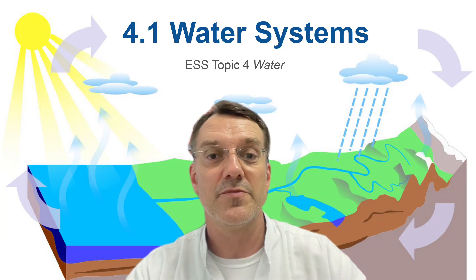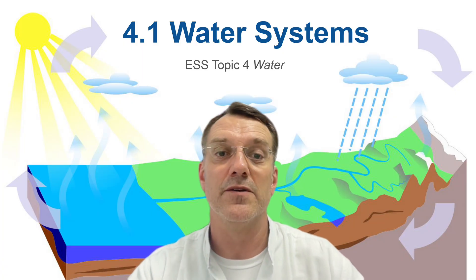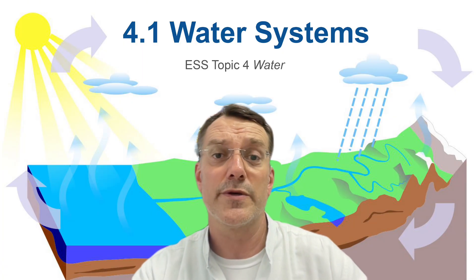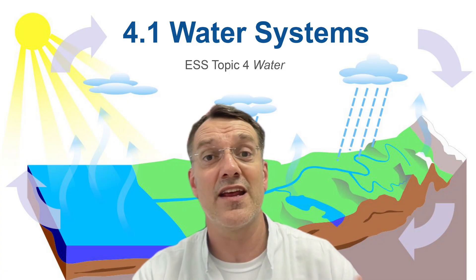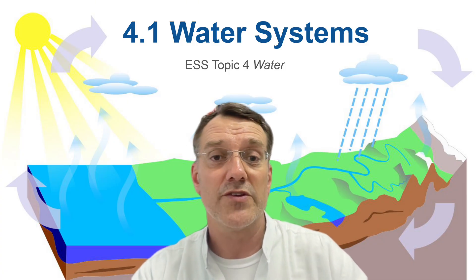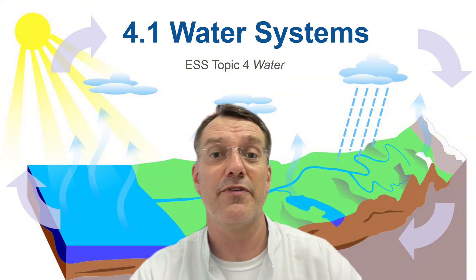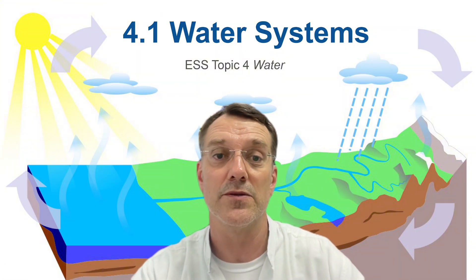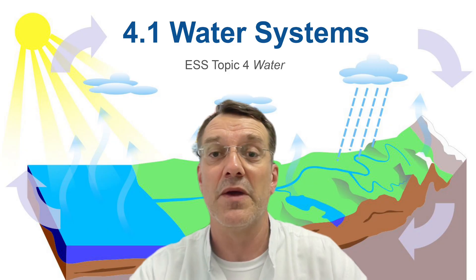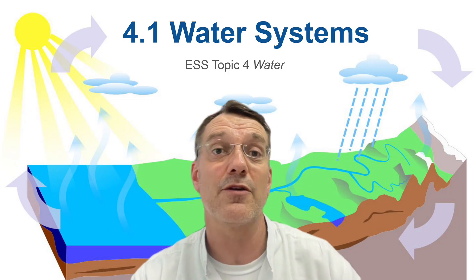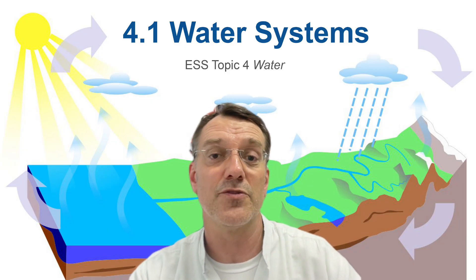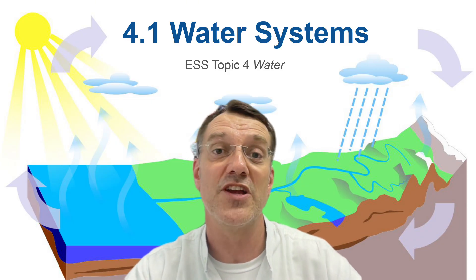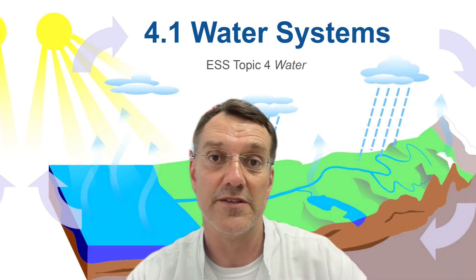Welcome to another IB Environmental Systems and Societies video. Today's topic is 4.1 Water Systems. In this video, we're going to examine how water moves around our planet and within ecosystems. We're also going to discuss how human activities affect the flows and storages of water within the hydrological cycle. Because water is fundamental to all life on Earth, understanding our systems is essential for addressing environmental challenges like water scarcity, pollution, and climate change impacts.